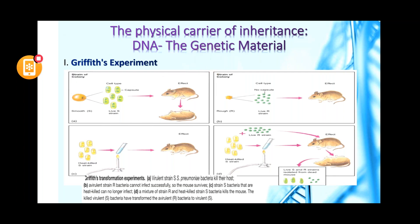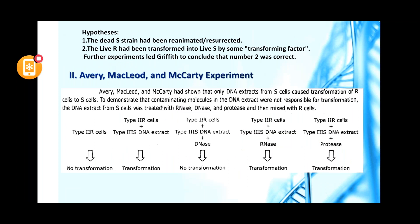Griffith hypothesized that the live rough strain had been transformed into live smooth strain by some transforming factor. They called this factor the 'transforming factor.' However, Griffith didn't conclude whether it was DNA, RNA, or protein — the picture was still not clear.